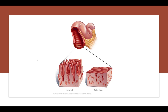The immune factors attack gluten and the tissue around it as it approaches the lining of the small intestine. Over time, this damages the lining of the small intestine and prevents the absorption of many nutrients.